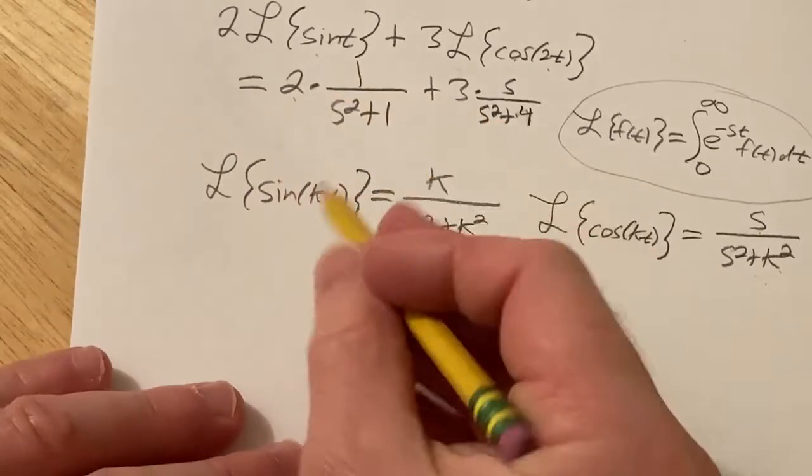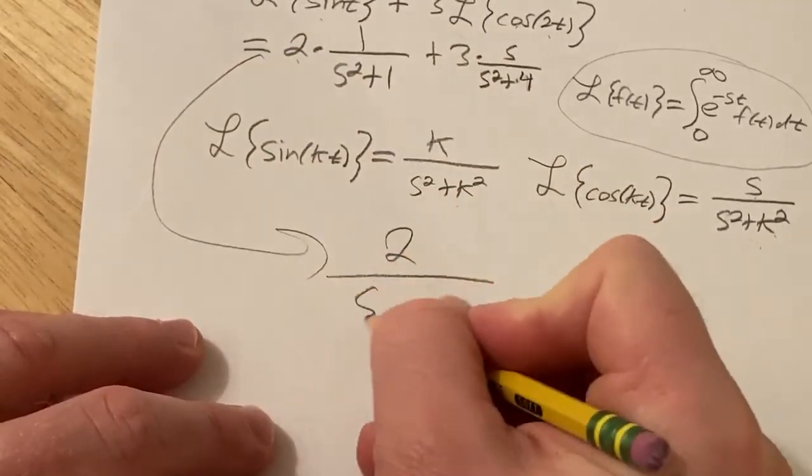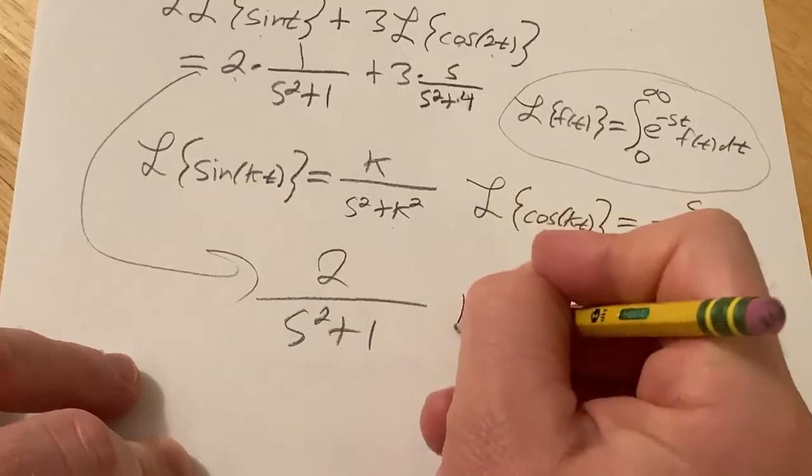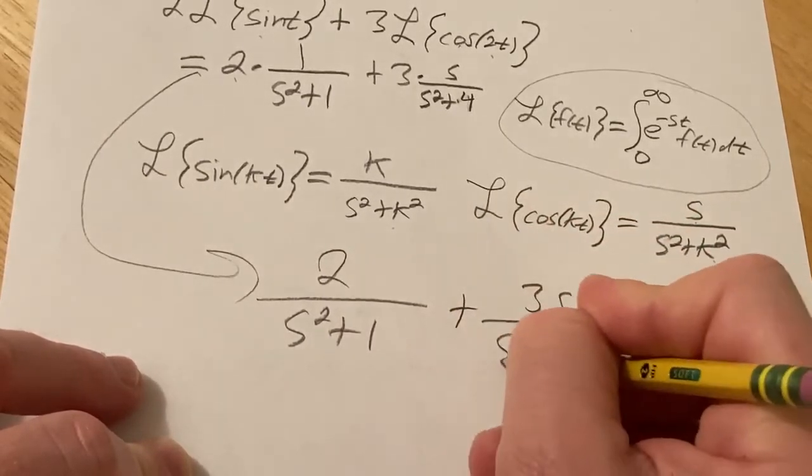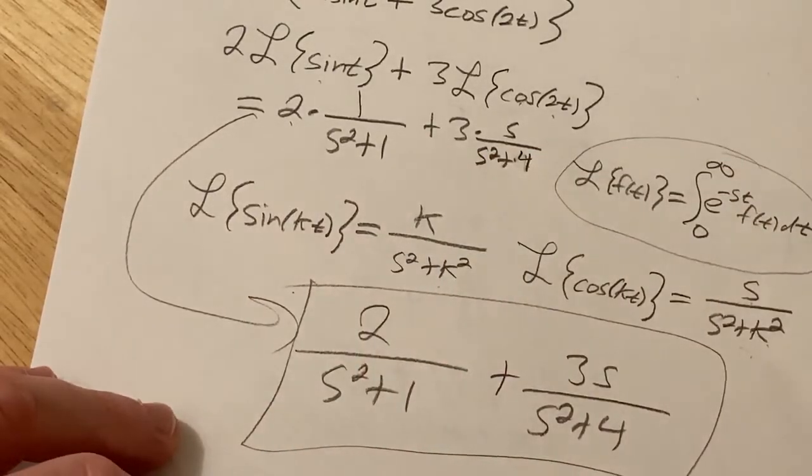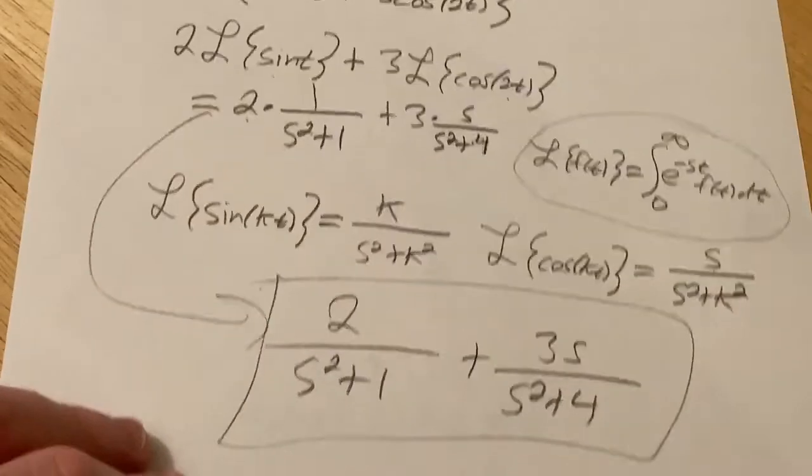So this will be 2 over s squared plus 1 plus 3s over s squared plus 4. And that would be the Laplace transform of this function here.